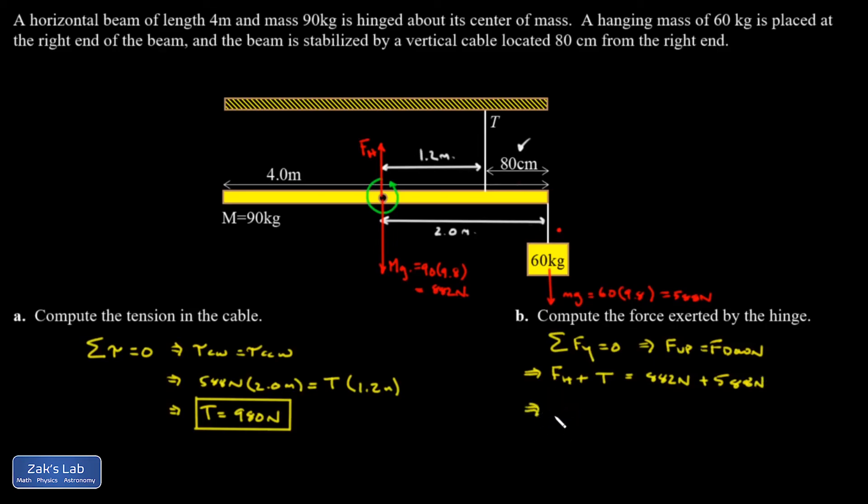I've already figured out the tension is 980, so I get my hinge force pretty quick here. 882 plus 588 minus 980, and that comes out to 490 newtons for the hinge force that came out positive, which means we chose the correct direction for the hinge force when we originally set it up.